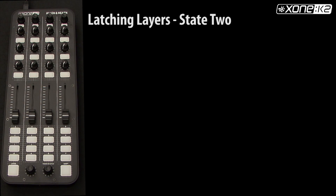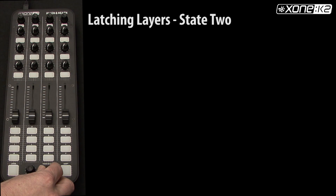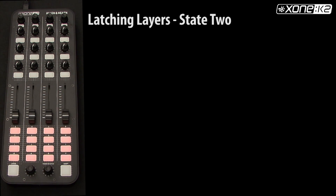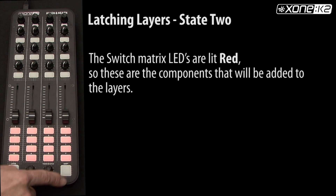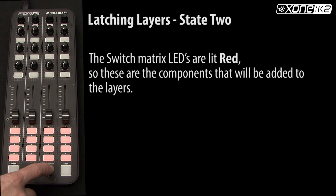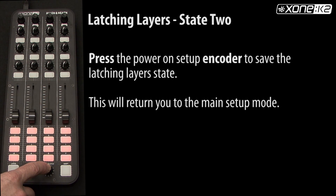Latching layers — state 2. In this example of latching layers we have selected state 2. The switch matrix LEDs are lit red, so these are the components that will be added to the layers. Press the power on setup encoder to save the latching layer state. This will return you to the main setup mode.